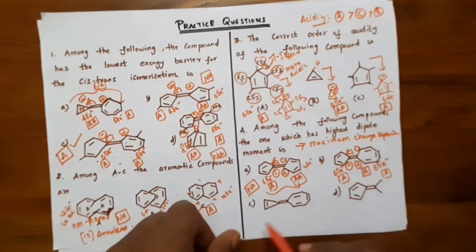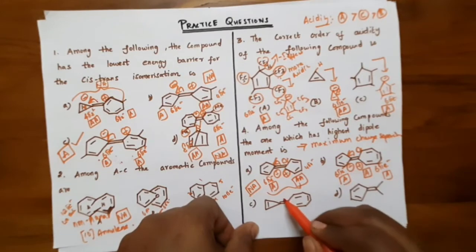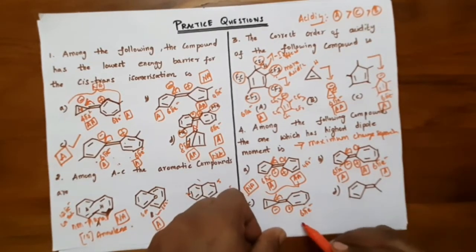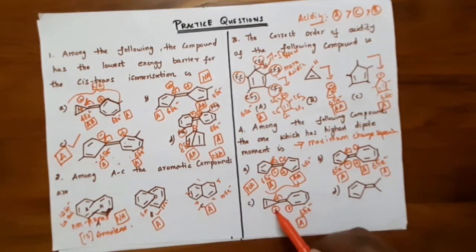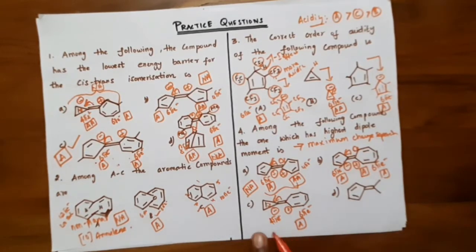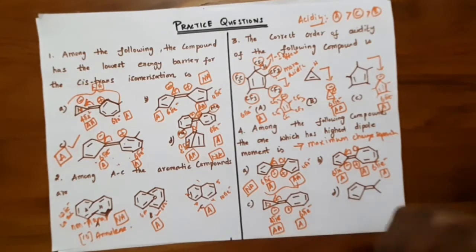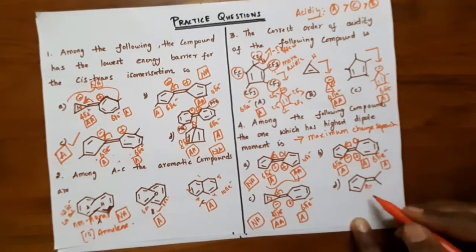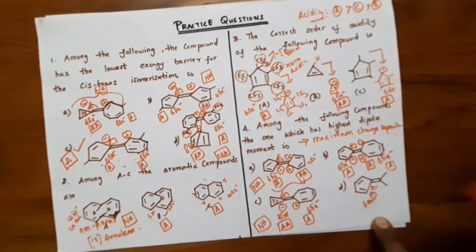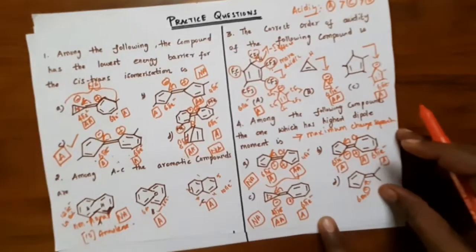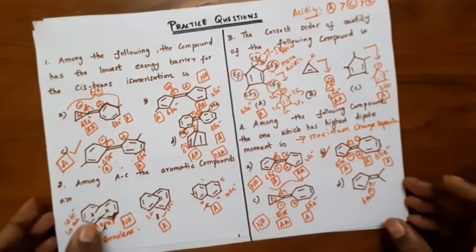Since option B has both parts aromatic with maximum charge separation, it is highly stable and has the highest dipole moment. So option B has the highest dipole moment.